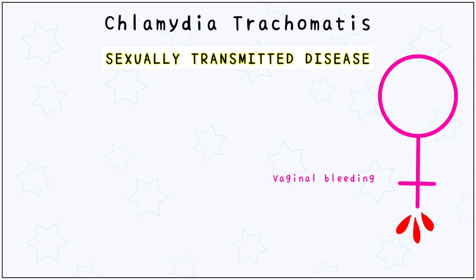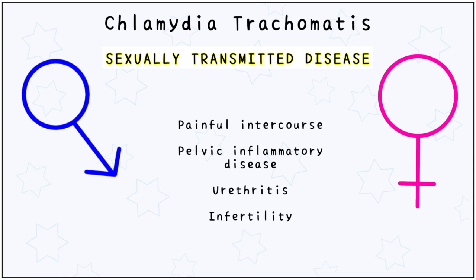Both sexes experience painful intercourse, pelvic inflammatory disease, urethritis, and infertility. The serotypes involved are D to K, which is an easy mnemonic to remember if you just fill in two alphabets.